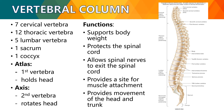The first cervical vertebra is the atlas, which holds the head, and the second is the axis, which gives the capability to rotate the head. Major functions of the vertebral column include supporting body weight, protecting the spinal cord, allowing spinal nerves to exit through intervertebral foramina, providing sites for muscle attachment, and enabling movement of the head and neck. The vertebral regions consist of seven cervical, twelve thoracic, five lumbar, and one sacral and one coccygeal, which are fused together.